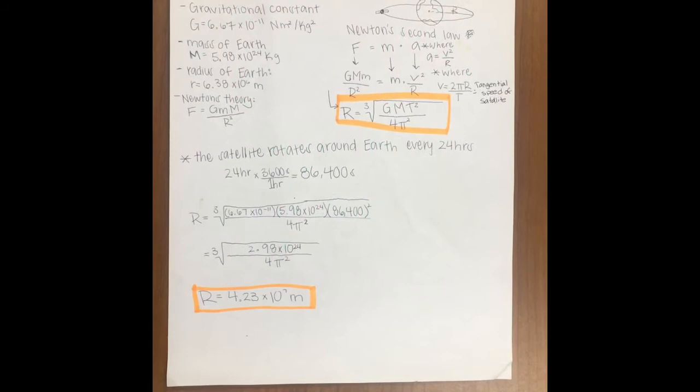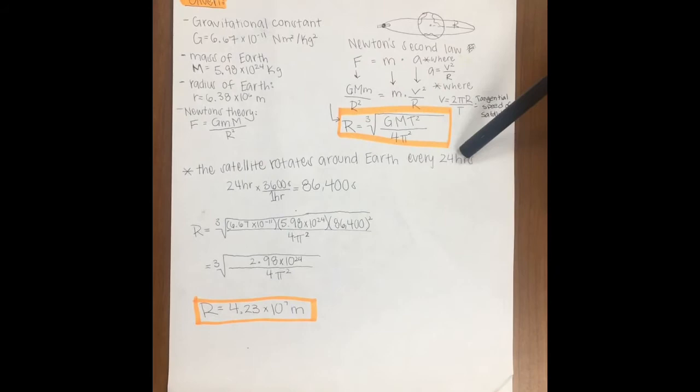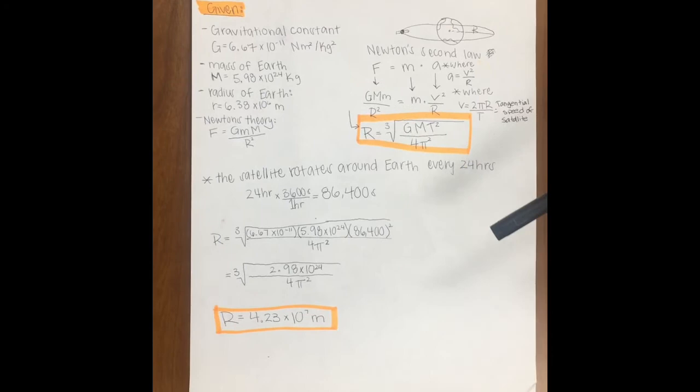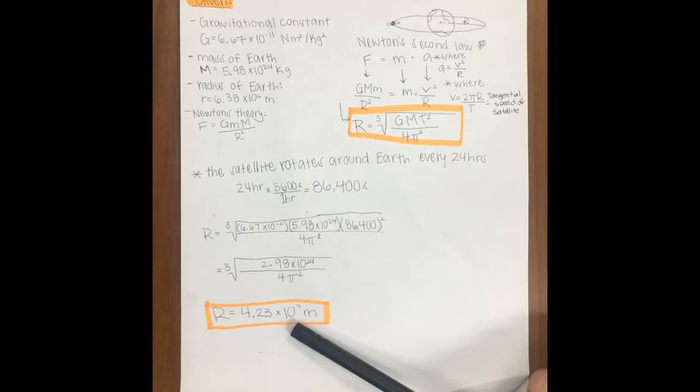One of the givens in the problem was the satellite rotates around the Earth every 24 hours. Hours is an American unit, so we need to switch it to SI. 24 hours converted to seconds is 86,400 seconds. From the equation we found before, we're just going to plug and chug, and we're left with the radius equals 4.23 times 10 to the 7 meters.